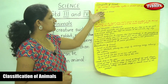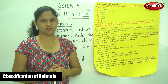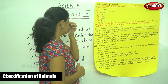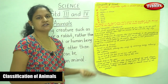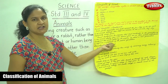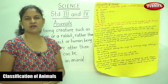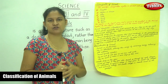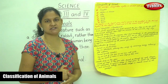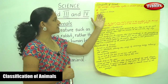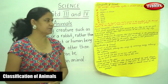So the animals have been scientifically classified into seven major groups: kingdom, phylum or division, class, order, family, genus, and species. The kingdom is the largest and the species is the smallest, and the phylum or division is the second largest in the group.